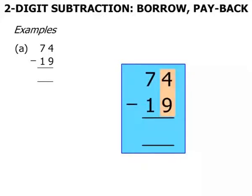Starting with our Units column, our Ones column, 4 minus 9. We can't do that. So let's think of the 4. We need to make that a 14 by borrowing 1 and we pay back the 1 down there. So what have we got? We've got 14 minus 9 and that is 5.